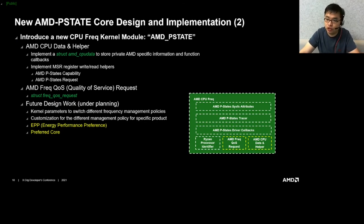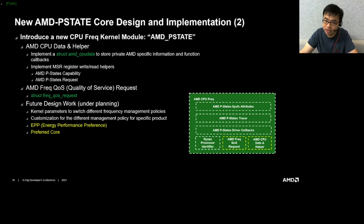Continuing with the AMD P-state driver: it implements CPU data structures to store private AMD-specific information and function callbacks. We implement AMD P-state register read and write helpers for the capability and request interfaces. This driver also implements a frequency constraint request interface instance for frequency constraints. The constraint structure sets the limited range between the maximum and minimum frequency, registered into the Linux power management quality-of-service framework.